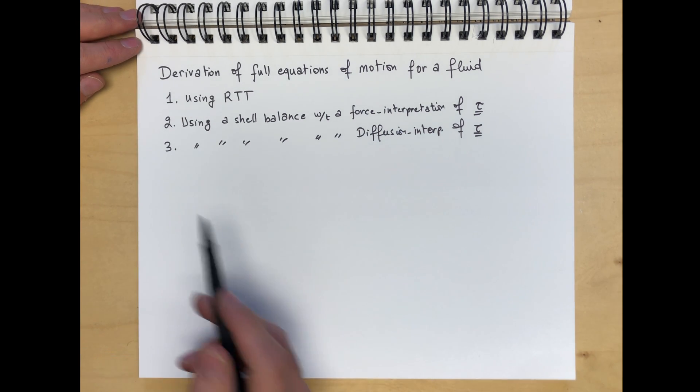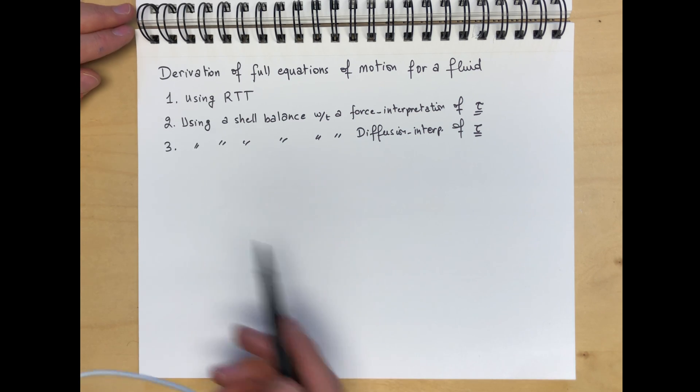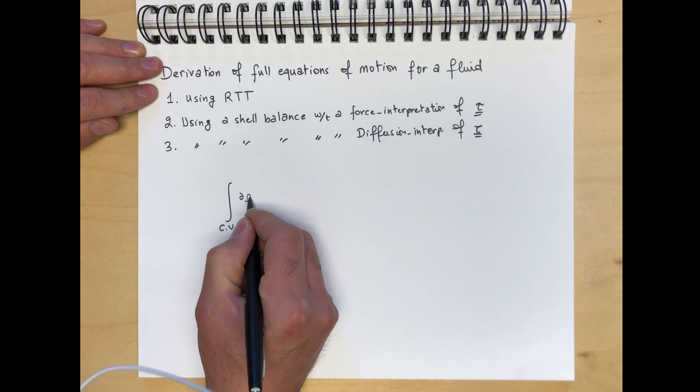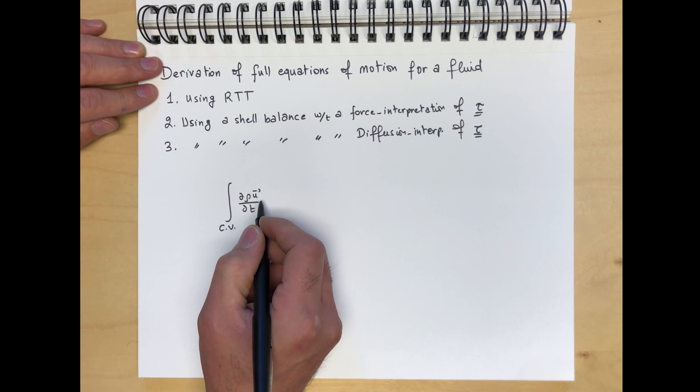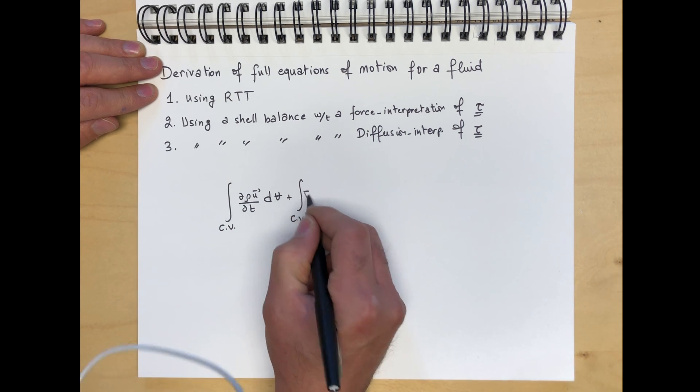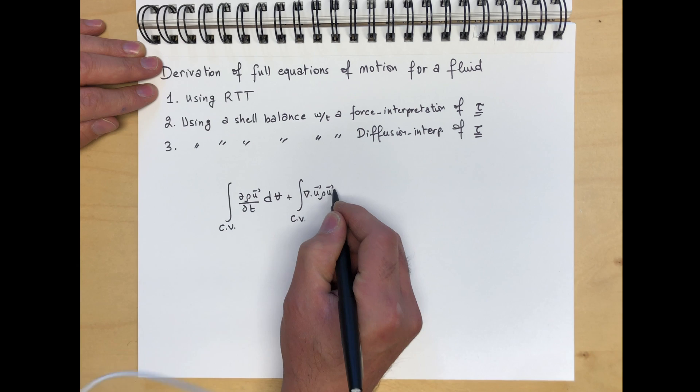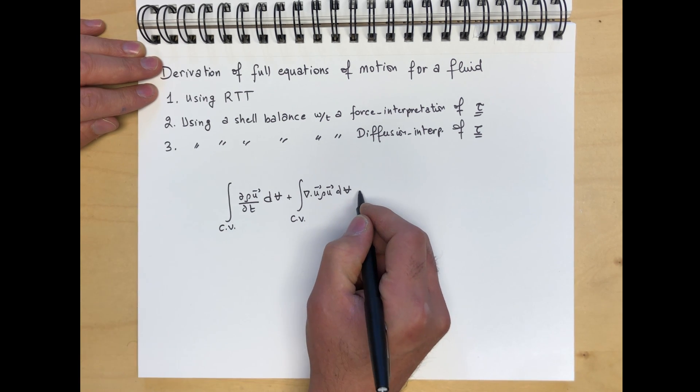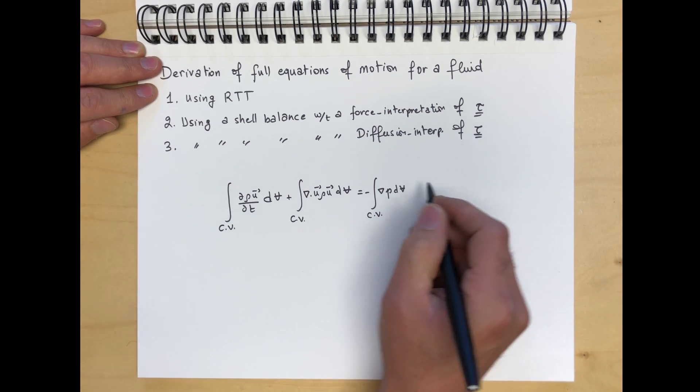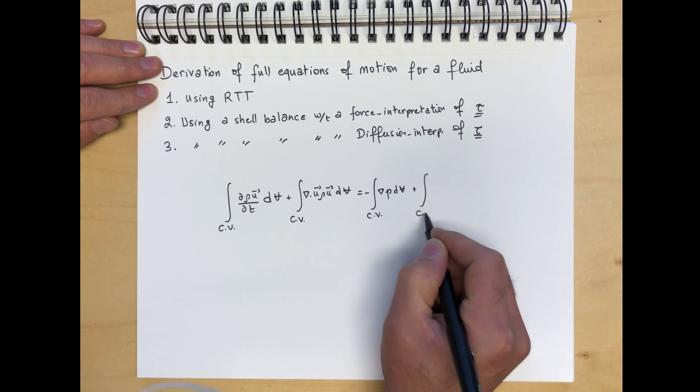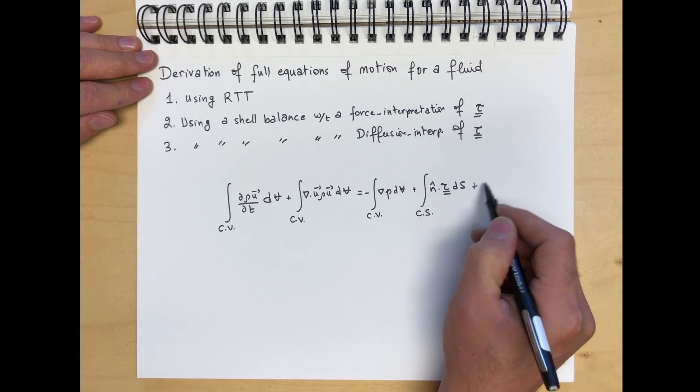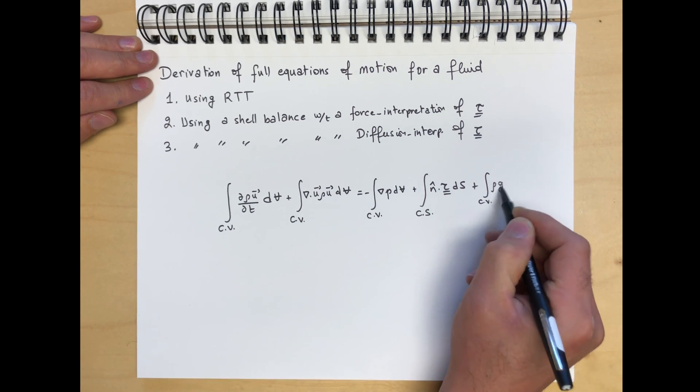Now, recall the integral form of the governing equations that we obtained from the Reynolds transport theorem was integral over control volume of partial rho u by partial t dv plus integral over the control volume of div u rho u dv equals negative integral over the control volume of grad p dv plus integral over the control surface of n dot tau ds plus integral over the control volume of rho g dv.